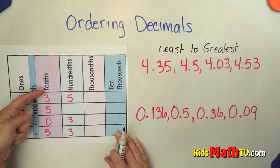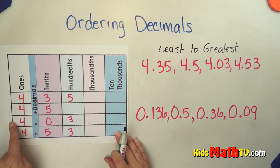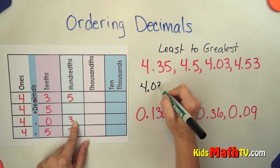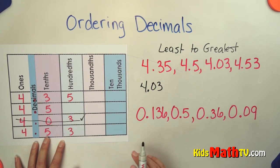So we're looking for the smallest tenths. Well, zero is the smallest tenths. So this number, 4 and 3 hundredths, is the smallest number. So I'm going to check that off that we've used it. Actually, I'm just going to cross it out.